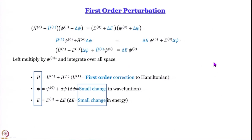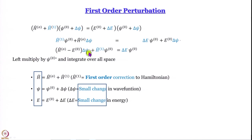After cancellations, we are left with: H 0th minus E 0th operating on delta psi, plus the first order correction to the Hamiltonian operating on psi 0th, equals delta E multiplied by the unperturbed wave function. The operator H 0th minus E 0th is operating on delta psi, and the problem is that we do not know what happens when it operates on delta psi — we only know what happens when it operates on the 0th order wave function.